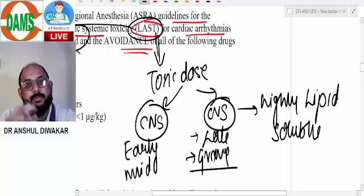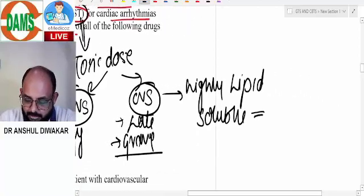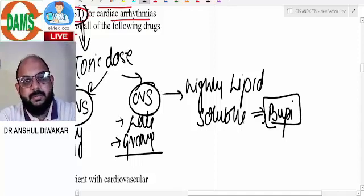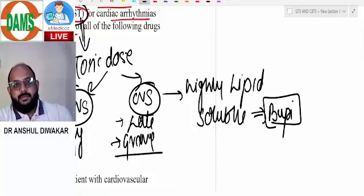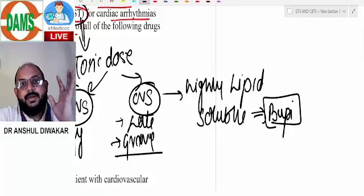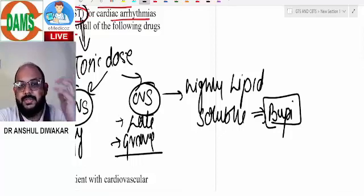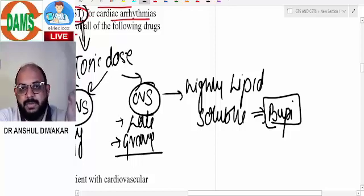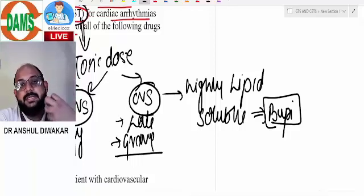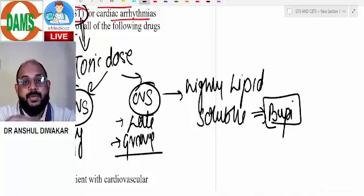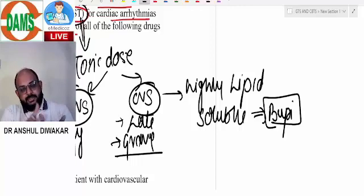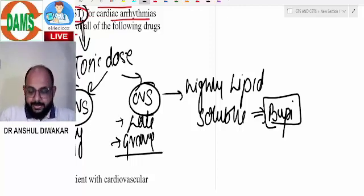You get CVS toxicity because highly lipid-soluble local anesthetic bupivacaine, which is most cardiotoxic, binds to cardiac myocytes very adherently. It's a sodium channel blocker and the myocardium depends on electrical activity with sodium channels. Bupivacaine is very lipid soluble, so binding is very adherent and doesn't dissociate early.